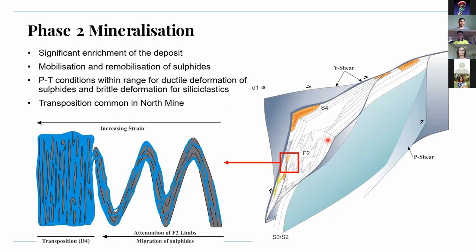Phase one on its own would not have been economical. Phase two saw significant enrichment of the deposit through mobilization and remobilization of sulfides, and mostly the peak conditions were in the range for ductile deformation of sulfides and brittle deformation of the host rock.